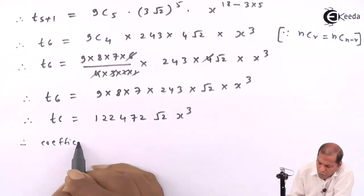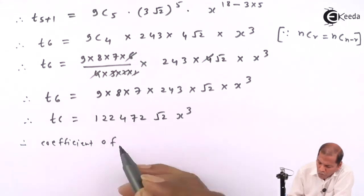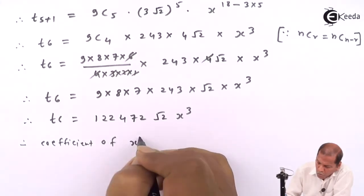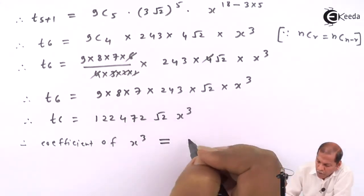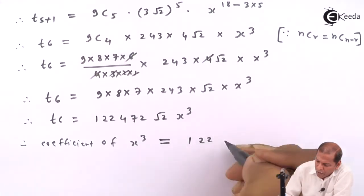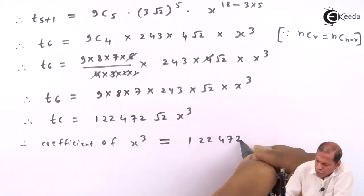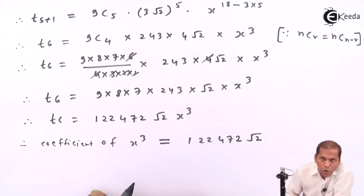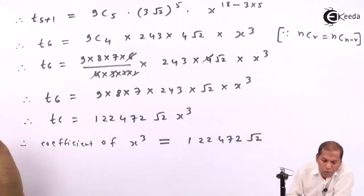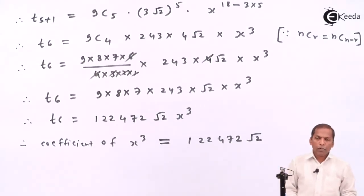Therefore the coefficient of x cube is equal to 122472√2. This is the required solution for the given problem.